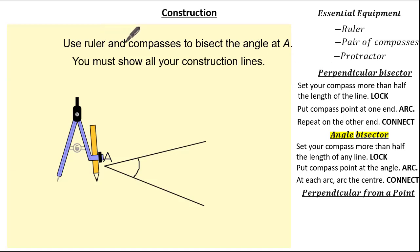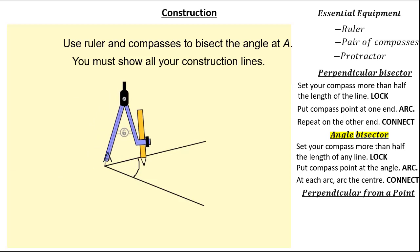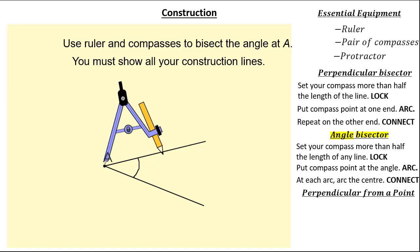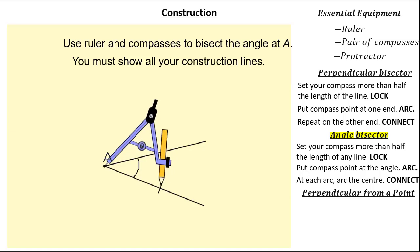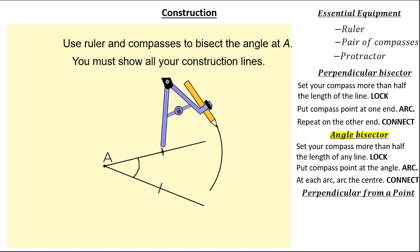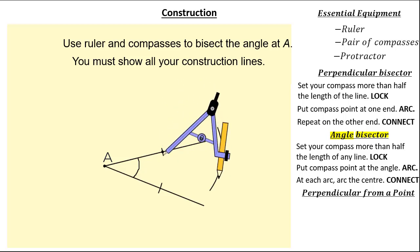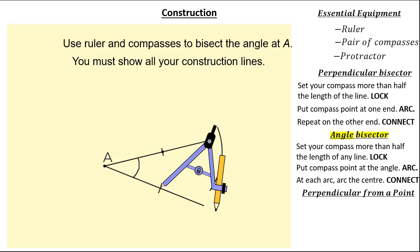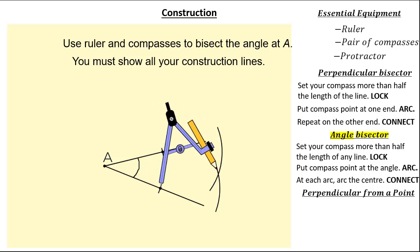The question wants us to use a ruler and compass to bisect the angle at A, showing our construction lines. Let's get our compass and set it for more than half the length of any line — I'm choosing this line. Locking and putting my compass point right at point A, we arc one line and then arc the other line. Then we move our compass point to where we've just arced, keeping the distance between the compass point and the pencil the same, and arc the centre. Moving our compass point to the other arc, we once again arc the centre. You can see we've created an intersection.